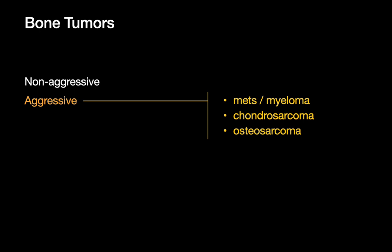The two most common aggressive chest wall bone tumors by far will be metastases and myeloma. However, two other aggressive bone tumors to be familiar with are chondrosarcomas and osteosarcomas. Chondrosarcomas and osteosarcomas in the chest wall are pretty rare — perhaps only one or two cases encountered in 10 years as a chest radiologist.